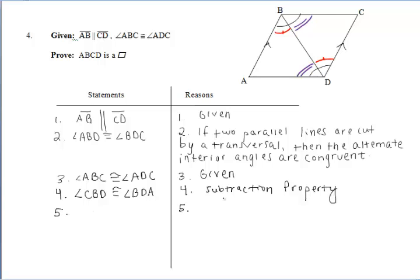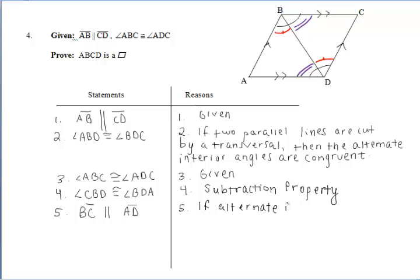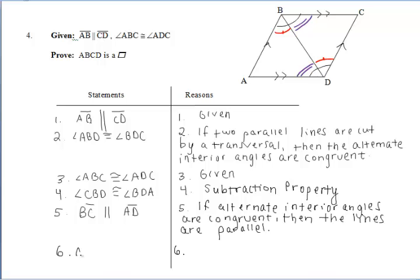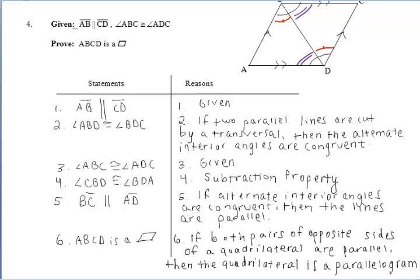From there, we now have another pair of alternate interior angles congruent, and now we're working in reverse. So we have alternate interior angles congruent, which then means that those two segments BC and AD are parallel because if alternate interior angles are congruent, then the lines are parallel.